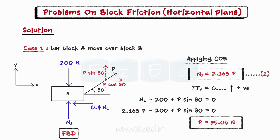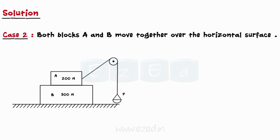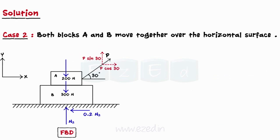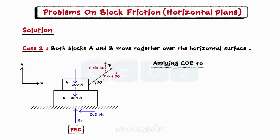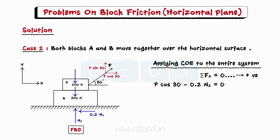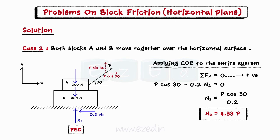Next, we analyse the second case. Here, we first draw the free body diagram of the entire system. Now we will apply conditions of equilibrium to the entire system. We will first equate the summation of all forces in the x direction to 0, finding a relation between the normal reaction N2 and the applied force.